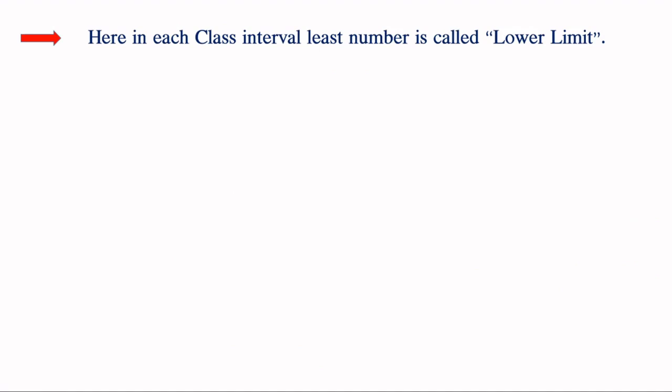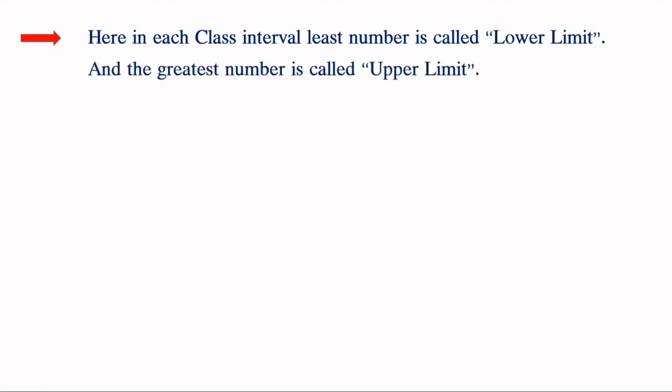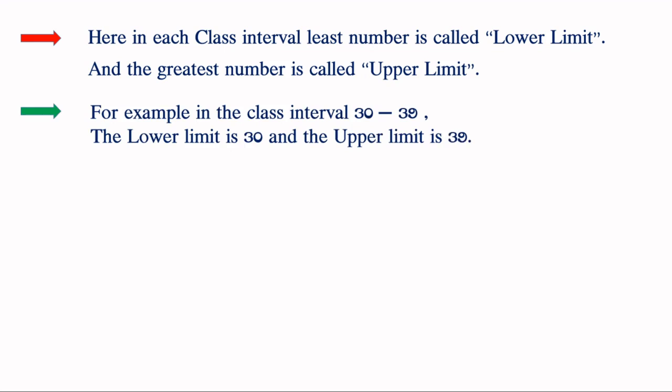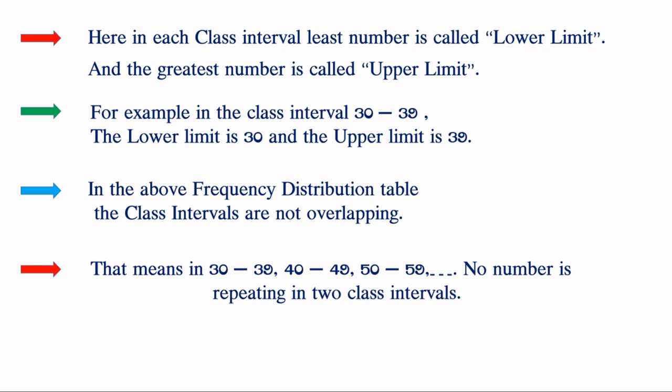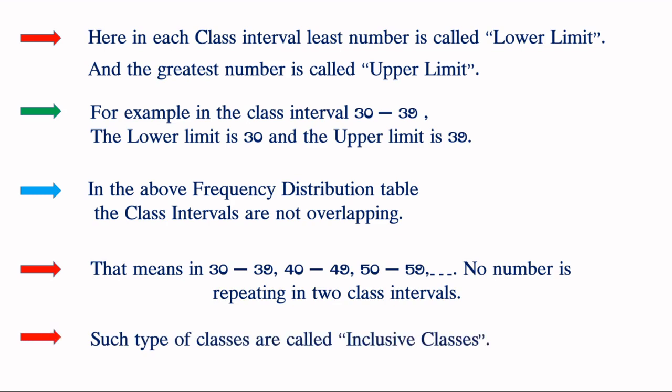In each class interval, the least number is called the lower limit and the greatest number is called the upper limit. For example, take the class interval 30 to 39. The lower limit is 30 and the upper limit is 39. In the above frequency distribution table, the class intervals are not overlapping — in 30 to 39, 40 to 49, 50 to 59, no number is repeating in two class intervals. Such types of classes are called inclusive classes.